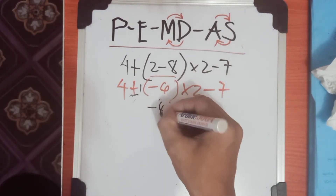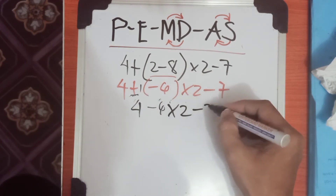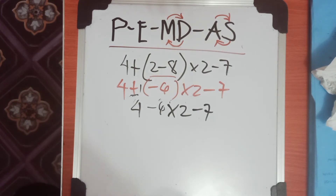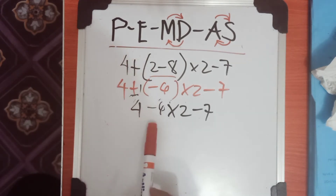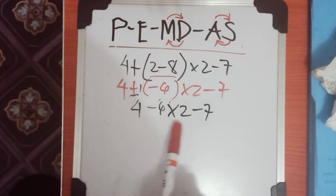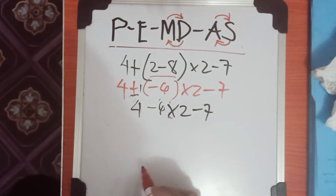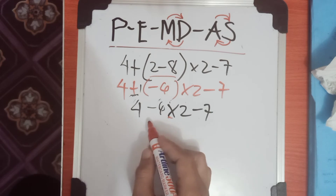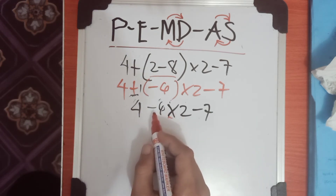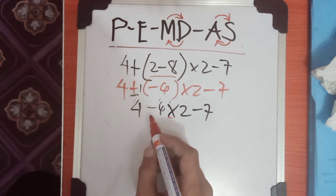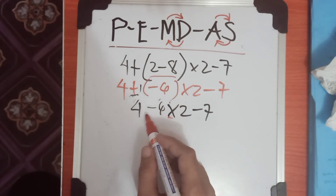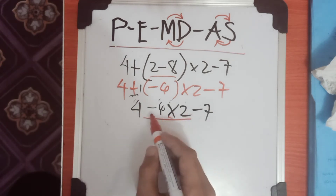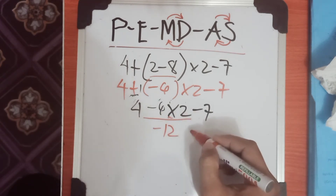We have negative 6. Now we check the PEMDAS rules again: no parenthesis, no exponent. For Multiplication and Division, we have only multiplication here — no division. Be careful of the sign of each number. Negative 6 multiplied by 2 equals negative 12.